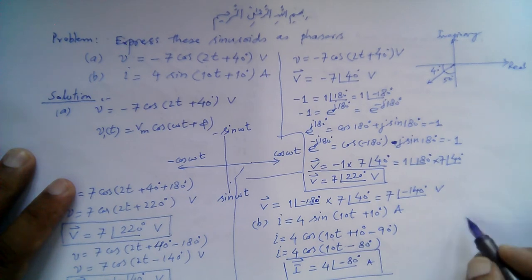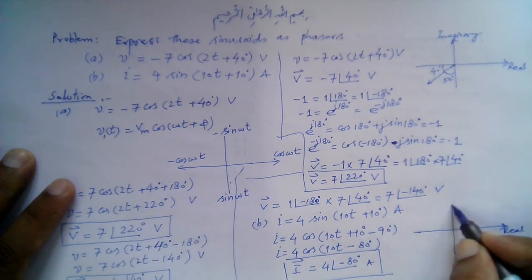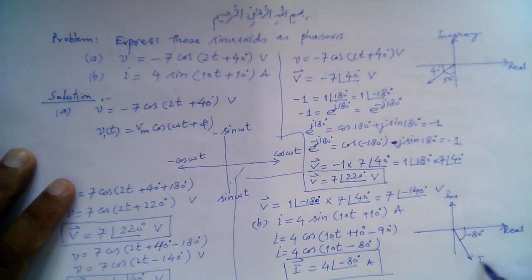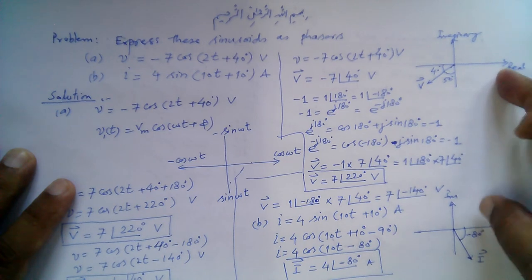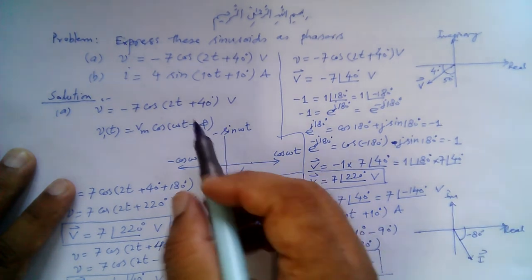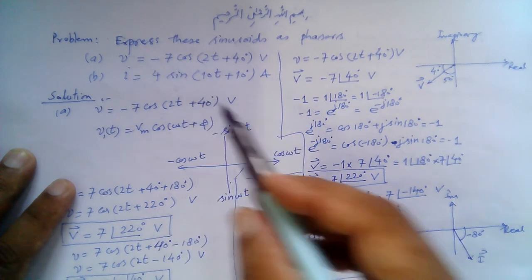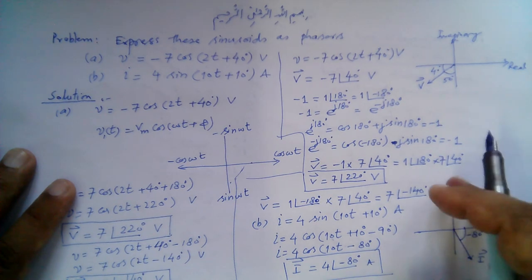The phasor representation has the real axis horizontal and imaginary axis vertical, with the phasor at −80°, giving Ī here. Note that we cannot represent both phasors on the same diagram because the angular frequencies are different — Part A has ω = 2 and Part B has ω = 10 — so we use different plots for each.